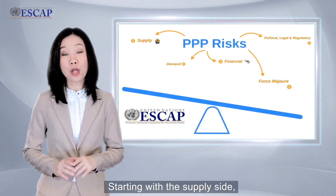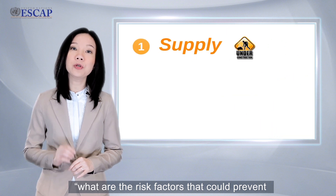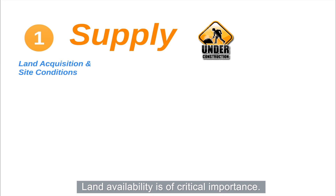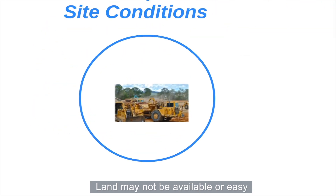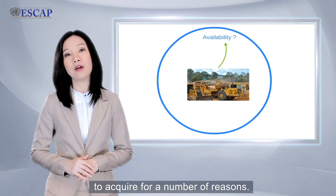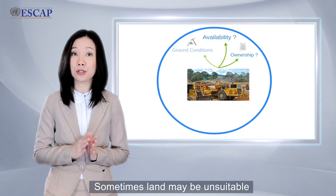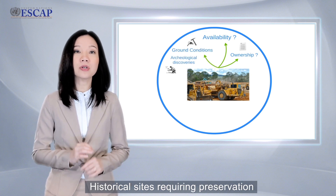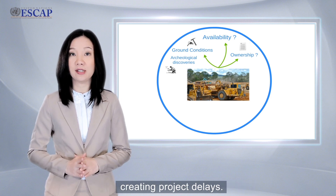Starting with the supply side, the question is: what are the risk factors that could prevent the public service from being delivered? Land availability is of critical importance — without land, no infrastructure project can be realized. Land may not be available or easy to acquire for a number of reasons. Sometimes land may be unsuitable or require restoration from contamination, or historical sites requiring preservation may be discovered, creating project delays.